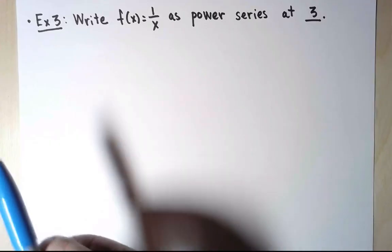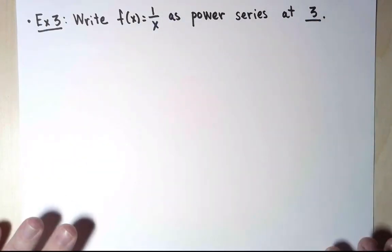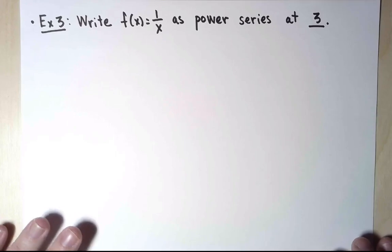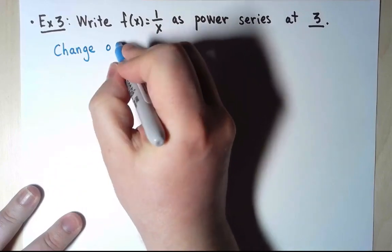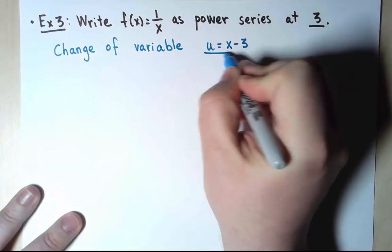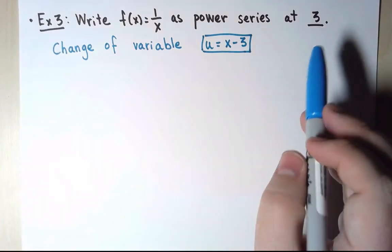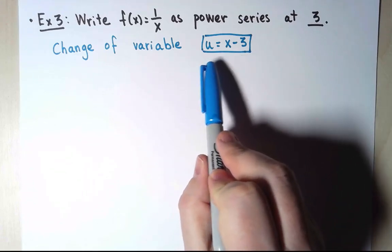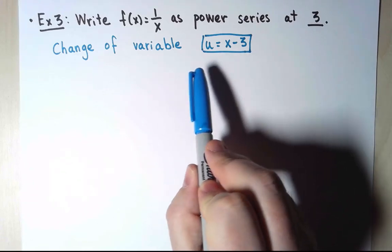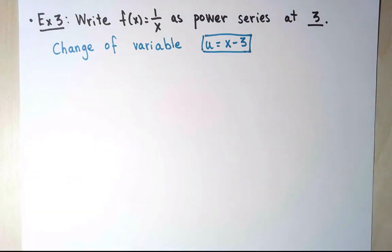The third example is, I think, the most interesting one. I want to write this function, 1 over x, as a power series centered at 3, not at zero, but at 3. Since it's not at zero, I'm going to begin by doing a change of variable. Why did I do that? A power series centered at 3 will be writing the function in terms of powers of x minus 3, and with this change of variable, when I call u equals x minus 3, I will just be writing powers of u. So effectively, I will be writing a power series centered at 0. And power series centered at 0 are easier. We are more used to them.